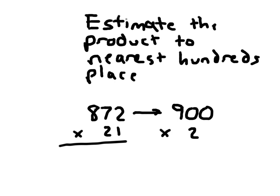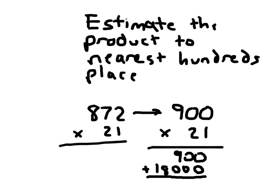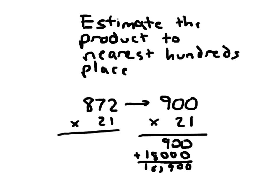Using double-digit multiplication here, 900 times 21, 900 times 1 is 900. 900 times this 2, this 2 is worth 20, so I place a 0. 2 times 0 is 0. 2 times 0 is 0. And 2 times 9 is 18. Adding those two together, I get 18,900. 18,900 is our estimated product.